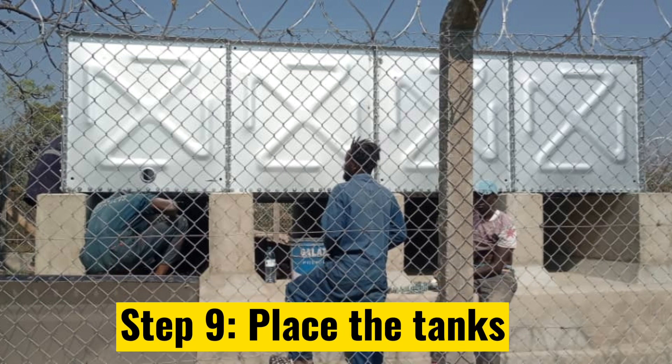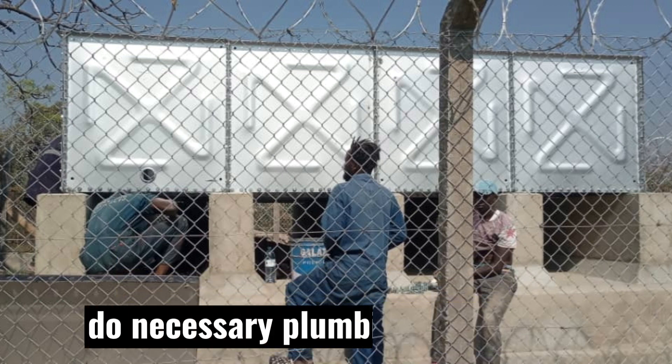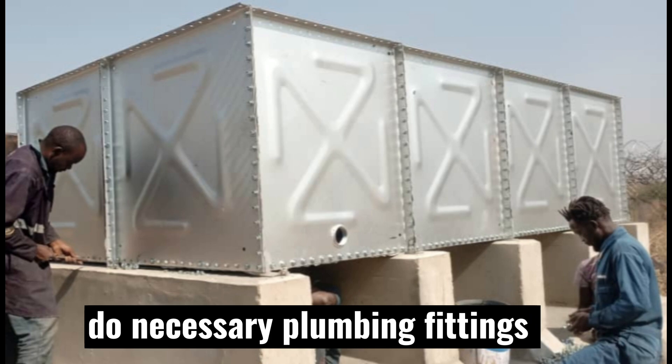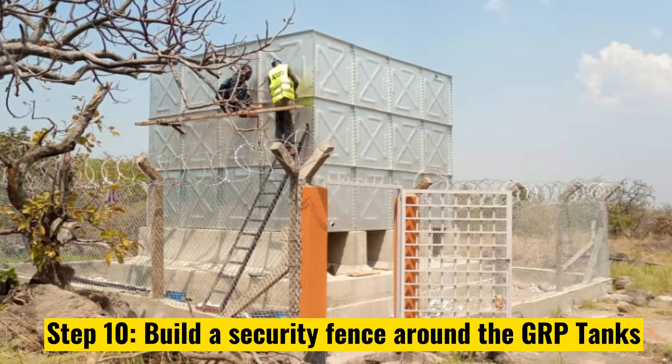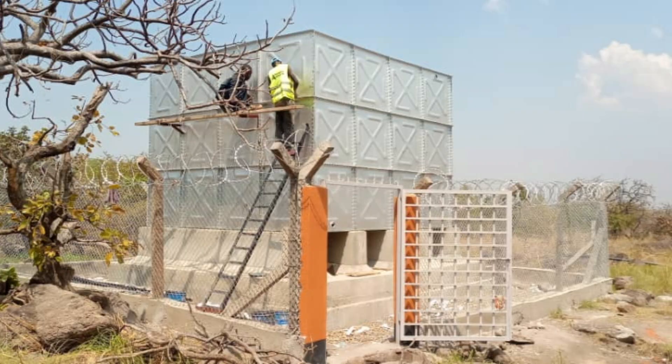Step 9 is to fix the tanks. Fix them properly and do necessary plumbing fittings. The 10th step is to build a fence around the GRP tank area for security reasons.